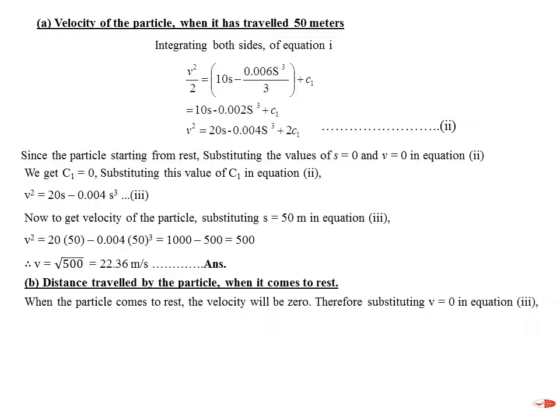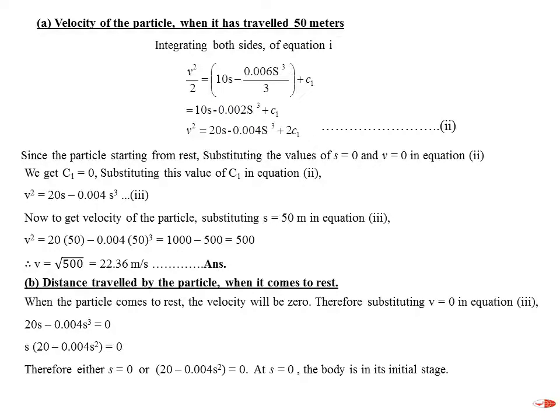For Part B, distance traveled when the particle comes to rest means v = 0. Substituting v = 0 in Equation 3: 0 = 20S − 0.004S³. Factoring out S: S(20 − 0.004S²) = 0. So either S = 0 (initial position) or 20 − 0.004S² = 0. Solving the second gives S = 70.7 meters, which is the distance traveled by the particle when it comes to rest.